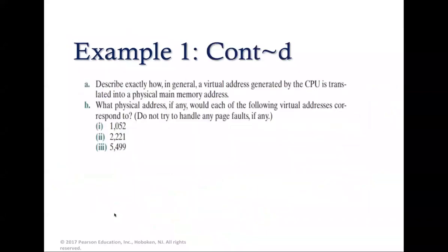The first part of the question asks how a virtual address generated by the CPU is translated into a physical main memory address. The answer: first split the binary address into a virtual page number and an offset; then use the virtual page number as an index into the page table; extract the page frame number; and concatenate the offset to the frame number to get the physical memory address.